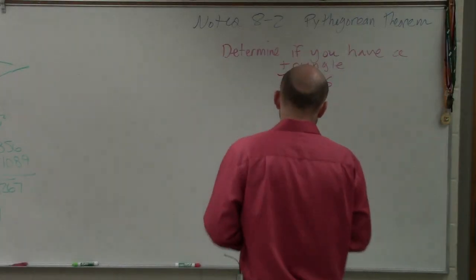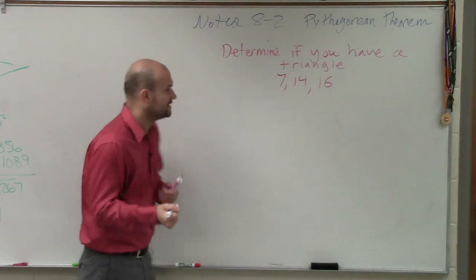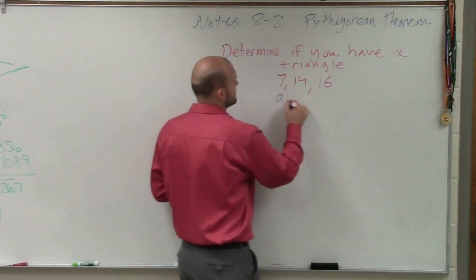When we look at this, to determine if you have a triangle, what we need to do is let's say we have three sides: a, b, and c.